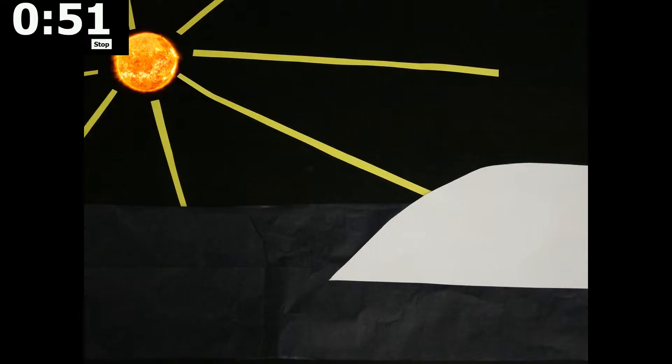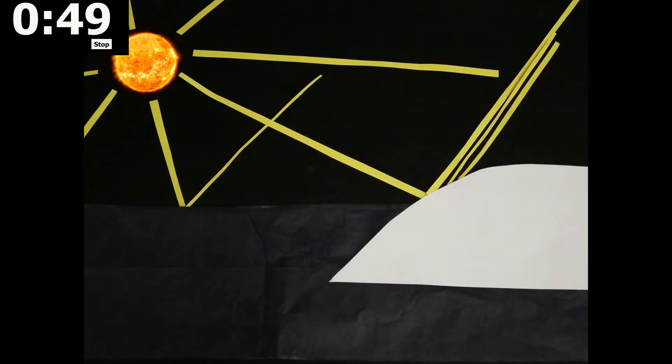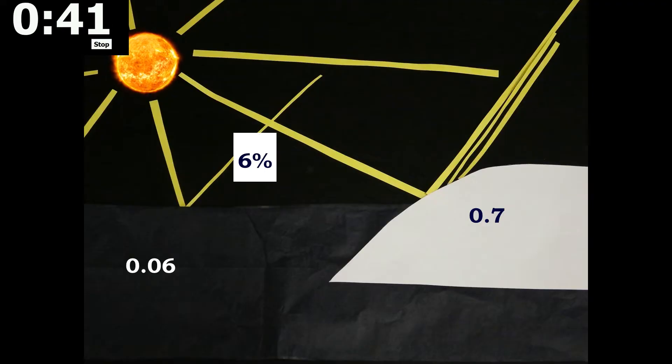Albedo is the fraction of solar energy reflected back into space. Ocean water has an albedo of only 0.06 while the albedo of ice is 0.7. This means that the oceans only reflect 6% of incoming solar radiation, while ice can reflect up to 70%. The rest of the energy is absorbed as heat.